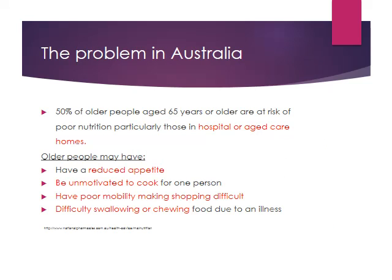While we're very lucky here in Australia to have access to plenty of food and good health care, we actually have a whole range of older people who are malnourished, and often they can be people who are in hospitals or aged care homes. We only have to look at the food dished out in some hospitals or nursing homes to see that the nutrition level isn't the highest. Older people have a reduced appetite, are often not very motivated to cook when living alone, have poor mobility so they can't shop, and may have difficulty swallowing or chewing. So we do have a big problem with malnourishment amongst older people here in Australia.